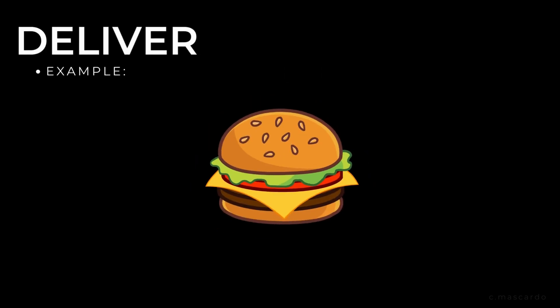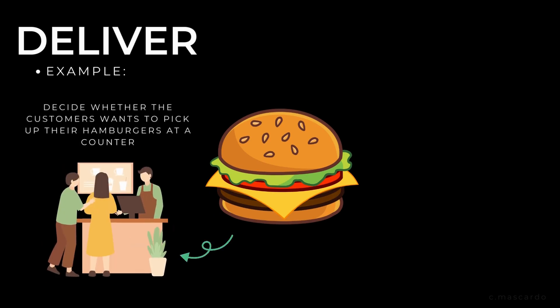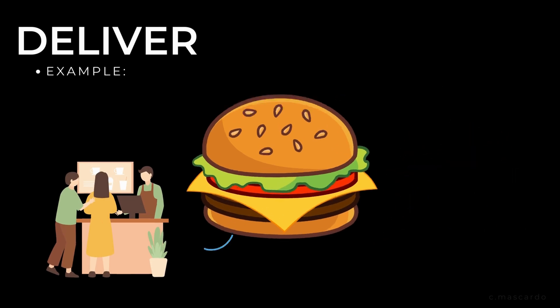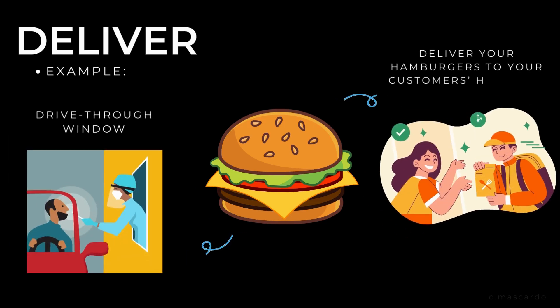Example for deliver: You need to manage the logistics of getting your hamburgers into your customers' hands. That means you'll need to decide whether you want customers to pick up their hamburgers at a counter, or whether a server will carry the hamburgers to their table. Or perhaps you need to have a drive-thru window, or deliver your hamburgers to your customers' homes or offices.